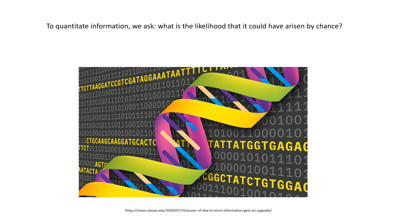That is a small protein — the body makes many larger and more complex proteins. So we are doing a very conservative estimate, one that helps the chance hypothesis. If we can show that even one small 150-amino-acid protein is very unlikely to have arisen by chance, then certainly all of the information in DNA for all of the proteins in our body would be extremely unlikely to have arisen by chance. But to meaningfully answer that question, we will need to learn a couple more things about proteins first, and then delve into some quantitative explorations.